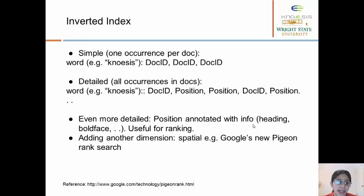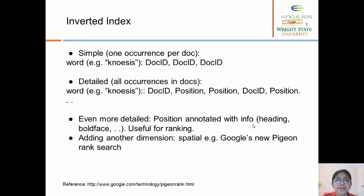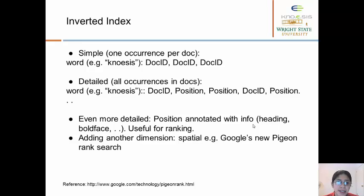But even position information is not enough for a relevant search result. For modern search engines, we use even more detailed position-annotated information, such as whether the keyword is present in the heading or if the font is boldface, which makes it more important and useful for ranking. The latest methodology used by Google, launched in July 2014, is Pigeon Rank, which sorts data using spatial information so that local search results get a higher rank since they may be more relevant to the user. This is a continuous improvement process — the more information you can include, the more detailed the ranking can be.